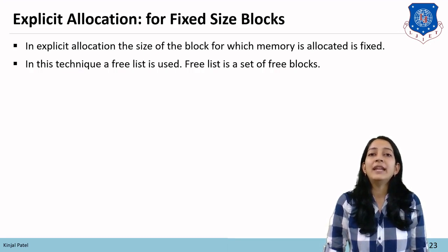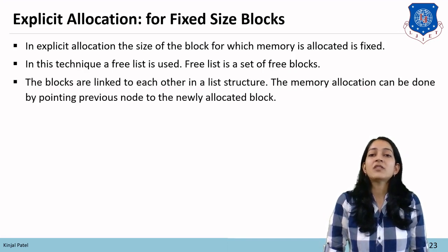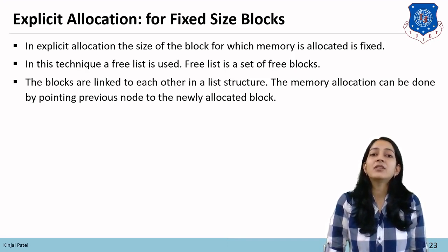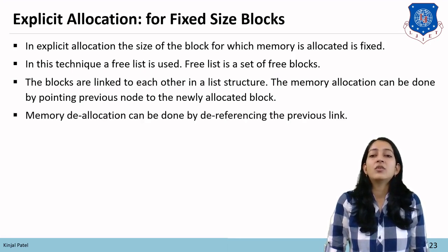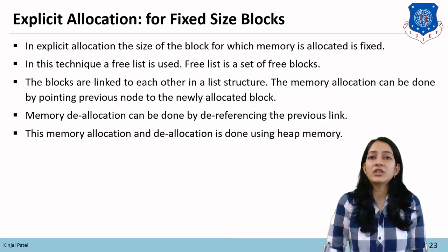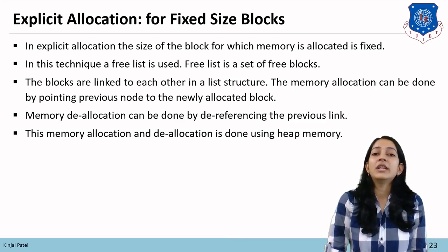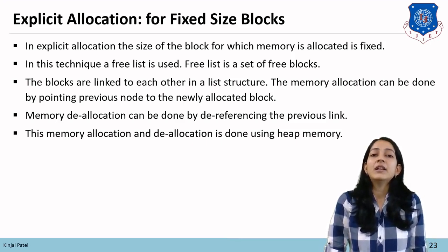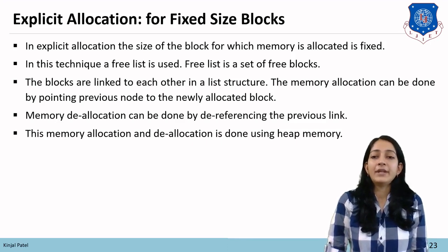In explicit allocation with fixed-size blocks, a free list is used. A free list is a set of free blocks where the blocks are linked to each other in a list structure. Memory allocation is done by pointing the previous node to the newly allocated block, and memory deallocation is done by dereferencing the previous link. This memory allocation is performed using heap memory.